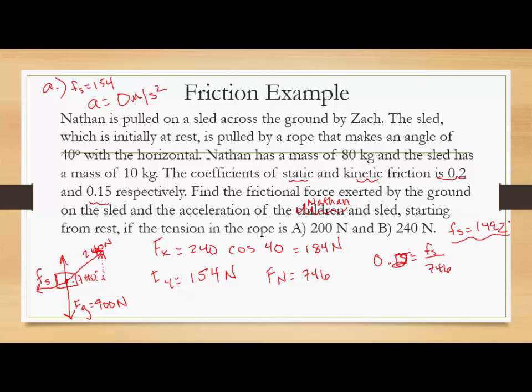So once we do that and we determine that it is going to move, then we need to find whatever our kinetic friction is. So we've made that distinction. So now our kinetic friction is Fk over Fn, so that would be 746 now times 0.15, because our coefficient is 0.15. So our frictional force is 112. So for B, 112 is our friction.